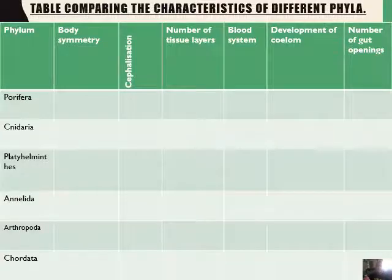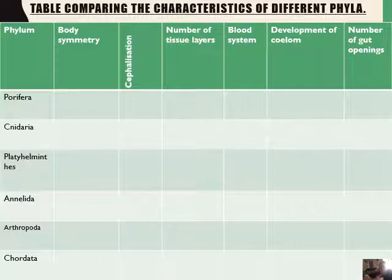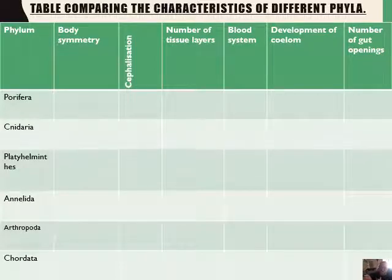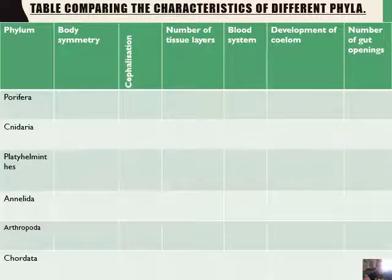I really recommend that you draw this table and have it ready for the next lesson, because I'm going to speak about each phylum independently — body symmetry of Porifera, cephalization of Porifera, number of tissue layers, blood system, development of coelom, number of gut openings — and you're going to fill this in as you go along. This will be the easiest way to finish this entire section of work and make it easy to study. Hope you have a great day, grade 11s, and I'll chat to you soon.